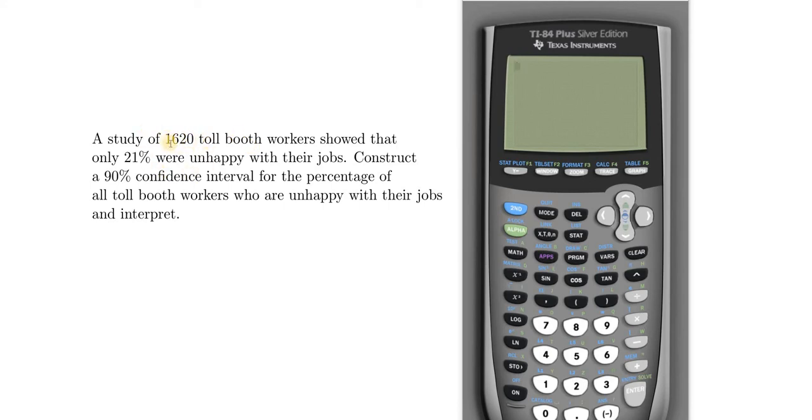So n is the total number of observations. That's going to be 1620. x is the total number of successes. Success in this problem is to be unhappy with your job.